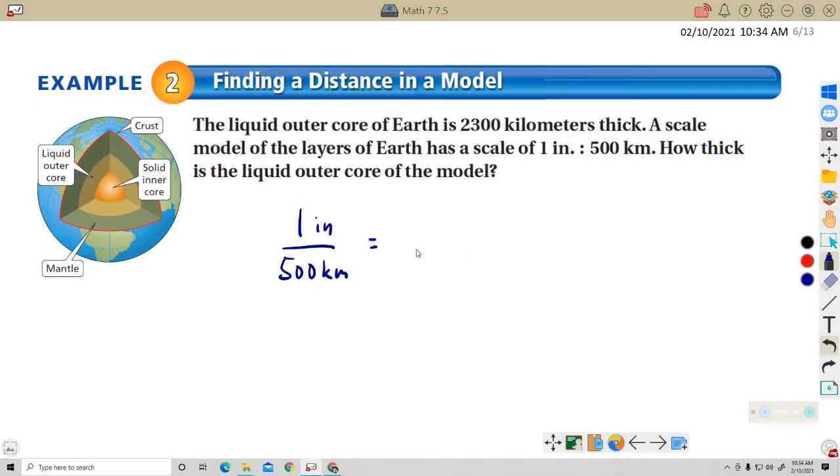How thick is the liquid outer core of the model? So let's write that scale one inch to 500 kilometers. And that's equal to. We're still talking proportions here, right? Now we want the model. So that's going to be up here. Because the shorter distance is the model. So we're going to call that T, I guess, for thickness. And then the actual thickness is 2300 kilometers.